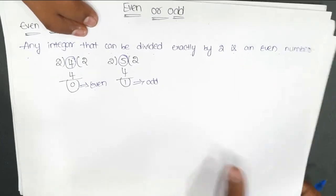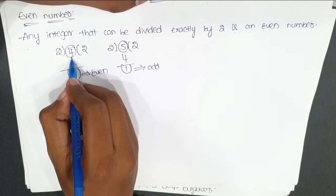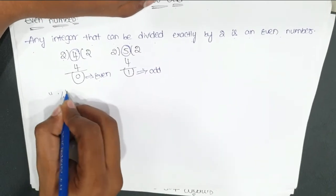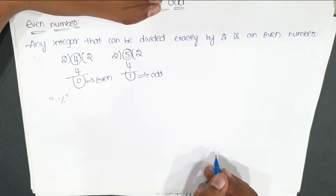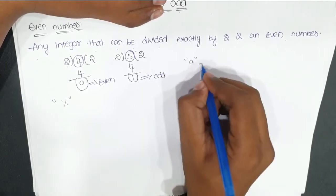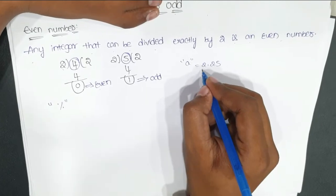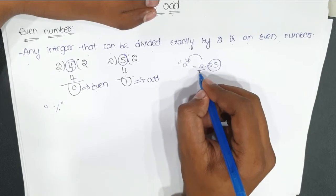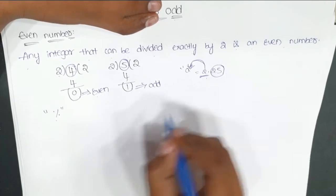Now I will apply this in C language. In C, we can get the remainder of a number divided by another number using the modulus operator, which is the percentage operator. C also has implicit conversions — for example, if we declare a variable of type int and assign it a value like 2.25, it automatically truncates the decimal part and stores only 2.